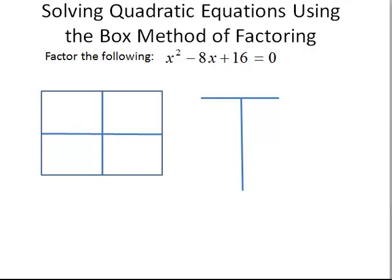We're asked to solve the given quadratic equation, and to do this we're going to be using the box method of factoring. Recall that the box method of factoring only looked at this trinomial, x squared minus 8x plus 16. Recall that we always try to pull out a GCF first. In this case, there is no GCF to pull out.